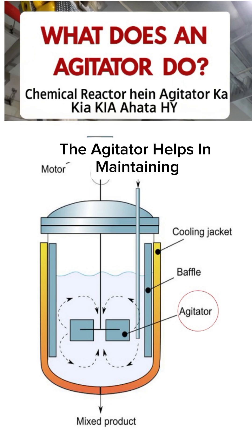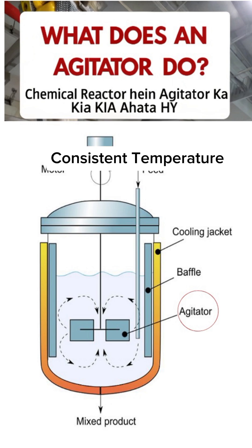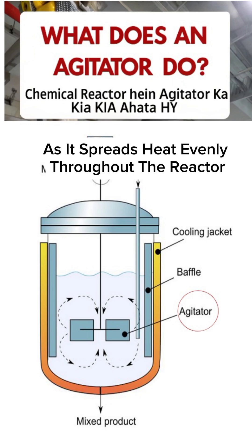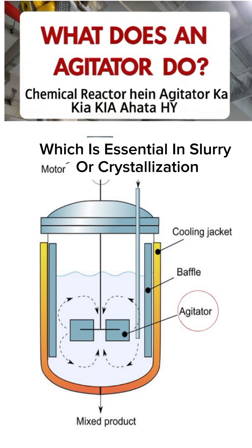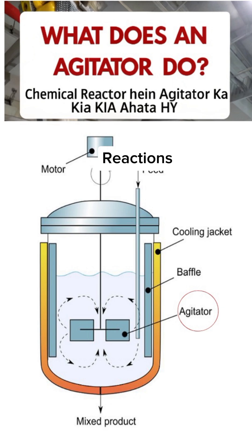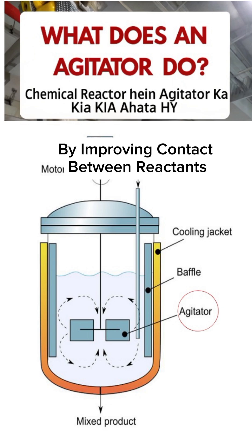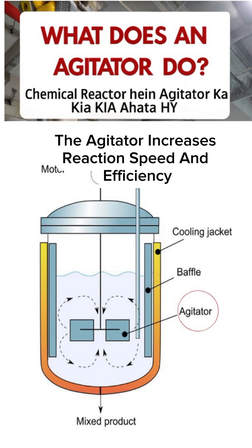The agitator helps in maintaining consistent temperature as it spreads heat evenly throughout the reactor. It also prevents solid particles from settling at the bottom, which is essential in slurry or crystallization reactions. By improving contact between reactants, the agitator increases reaction speed and efficiency.